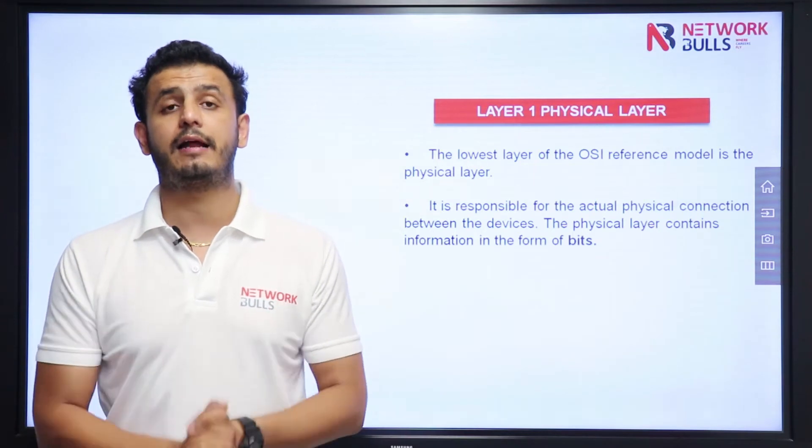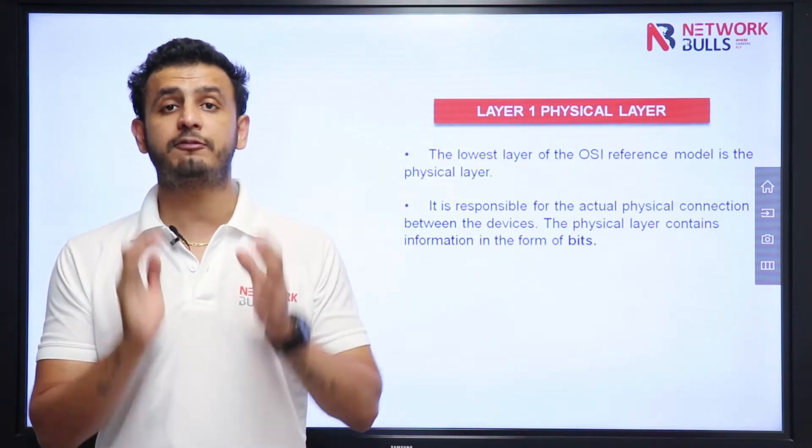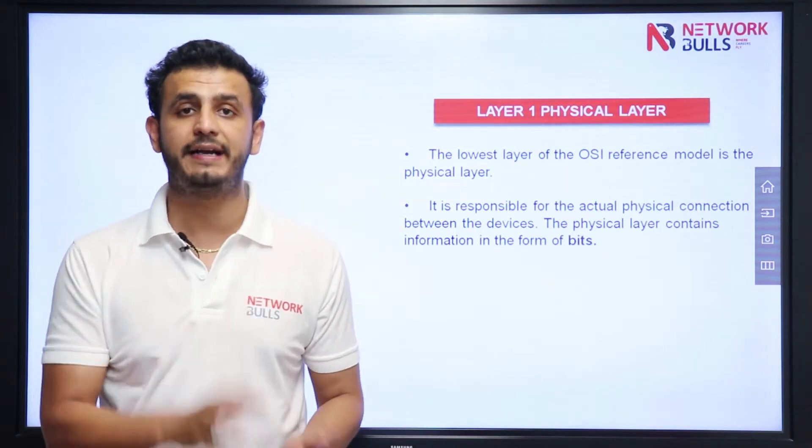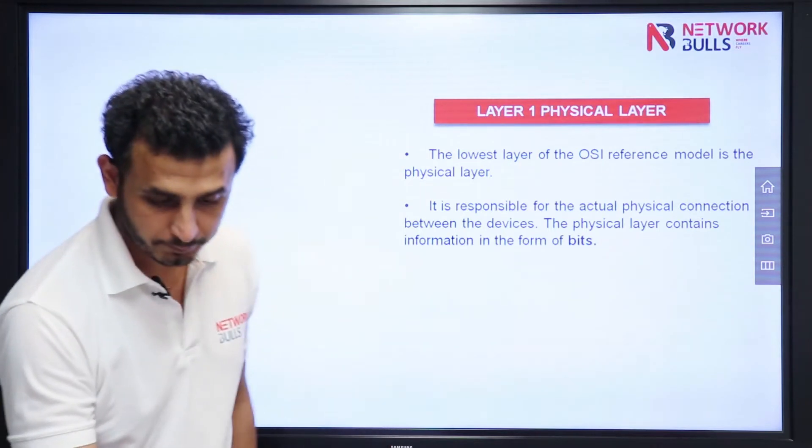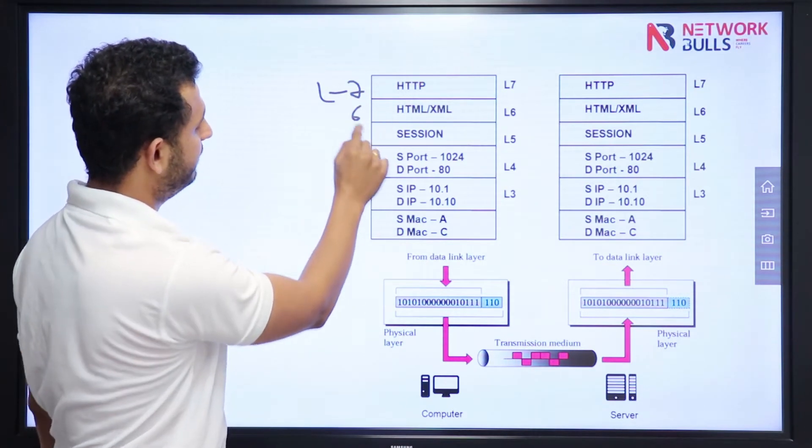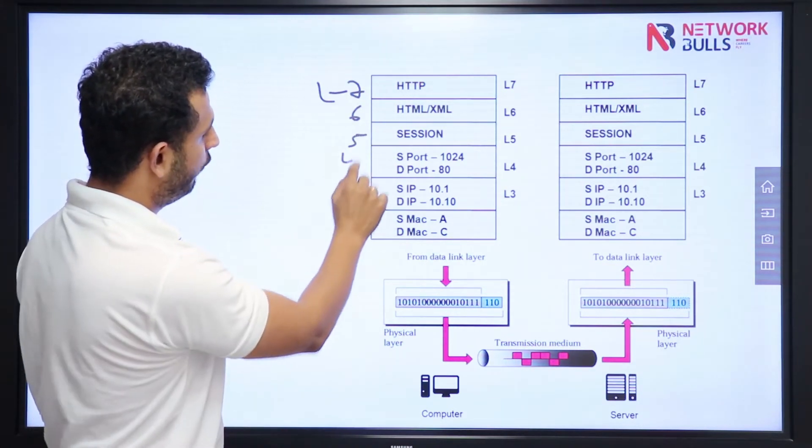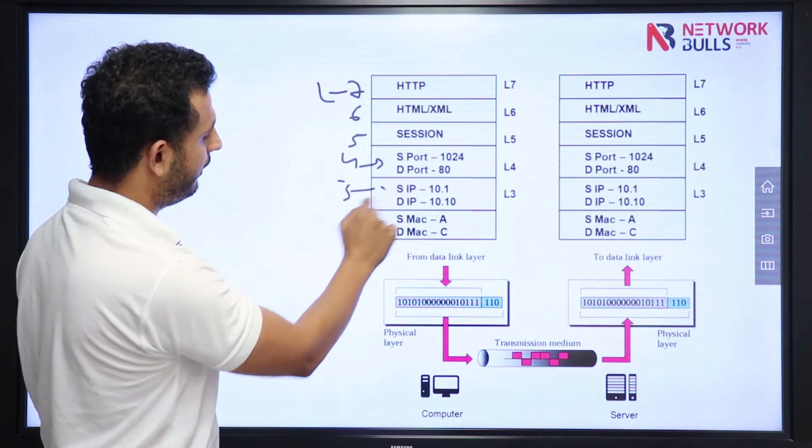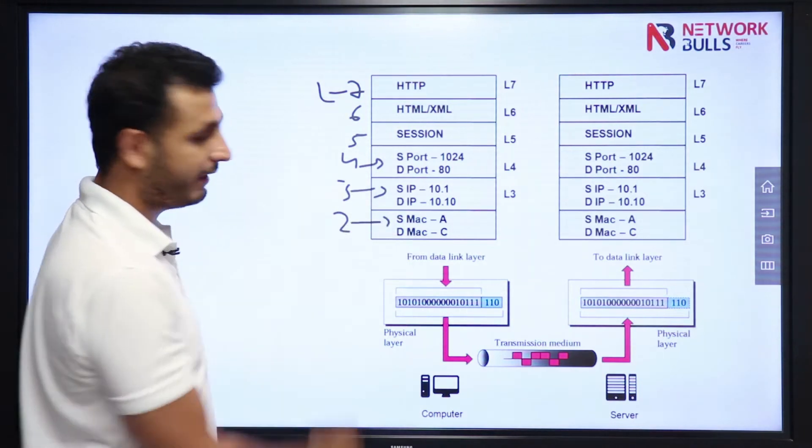Physical Layer is responsible for transmitting data on the physical media. Let me show you. Here you can see Layer 7, Layer 6, Layer 5, Layer 4 with port numbers, Layer 3 with IP addresses, and Layer 2 with MAC addresses.